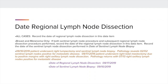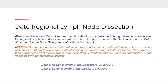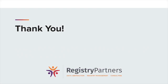Date of Regional Lymph Node Dissection. This data item is recorded for all cases. For breast and melanoma, if the Sentinel Lymph Node Biopsy is performed followed by the subsequent Regional Lymph Node Dissection, record the date of the Regional Lymph Node Dissection in this data item and, of course, the date of the Sentinel Lymph Node Biopsy in that data item. If the Sentinel Lymph Node Biopsy and the Regional Lymph Node Dissection are performed during the same procedure, the date of both data items — Regional Lymph Node Dissection and Sentinel Lymph Node Biopsy — will be the same. This concludes the CTR Coding Break; we hope you found it informative and thank you for listening.